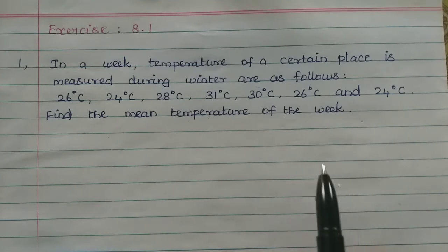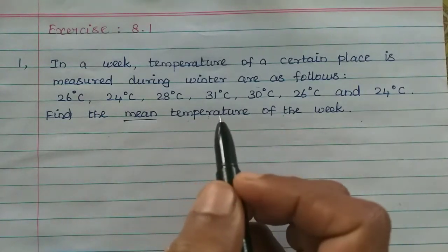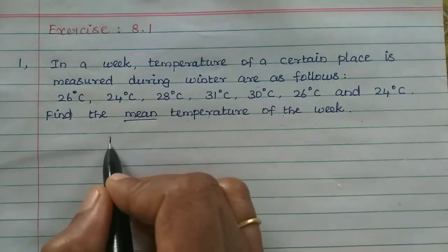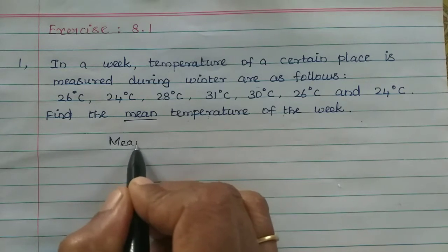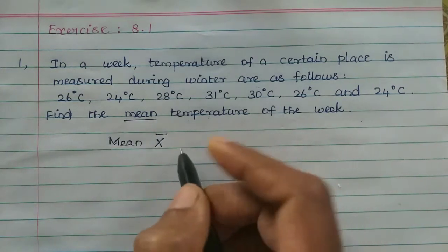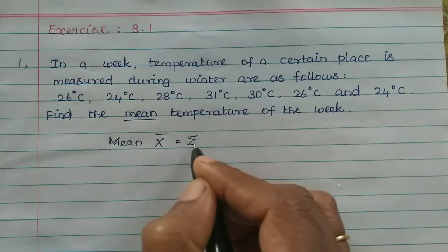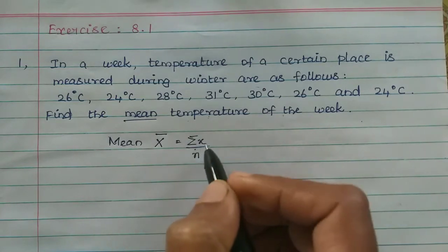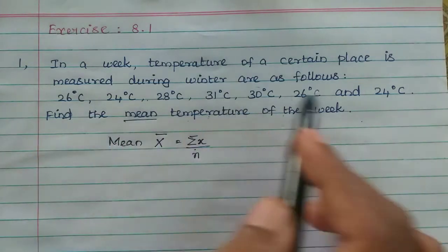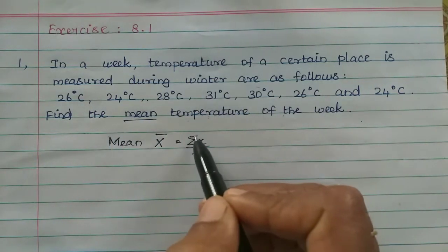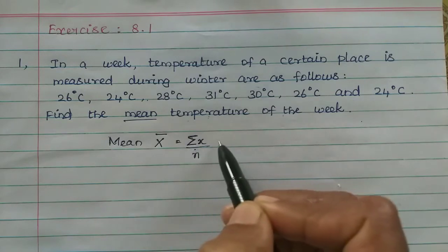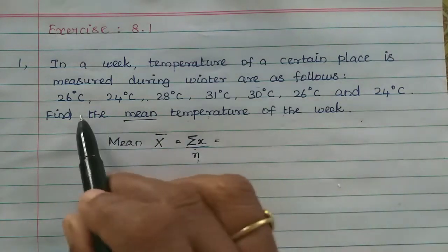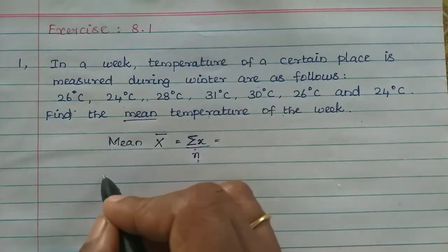If you look at the mean or average, we place the formula. The mean formula is sigma X by n. Sigma X means we add all the X values. The number of observations n is 7 days in a week.